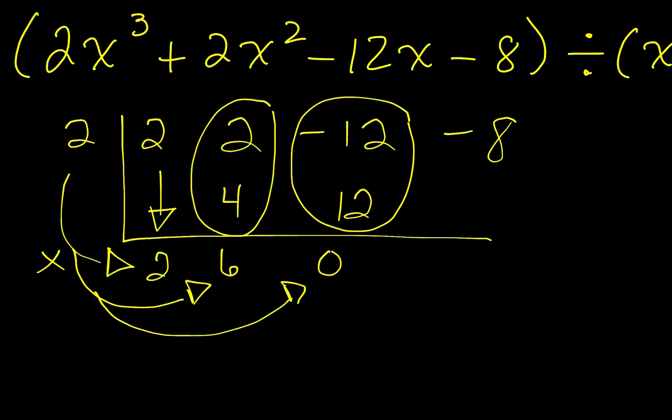One more time. 2 times 0 is 0. Combine. Negative 8 plus 0 is negative 8. Negative 8 is going to be the remainder.